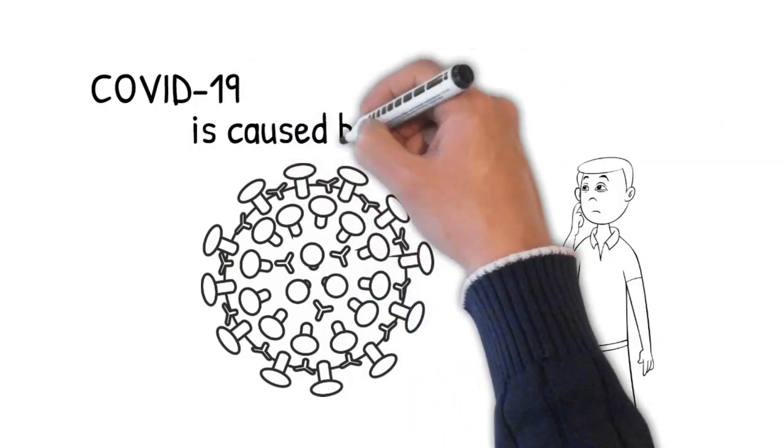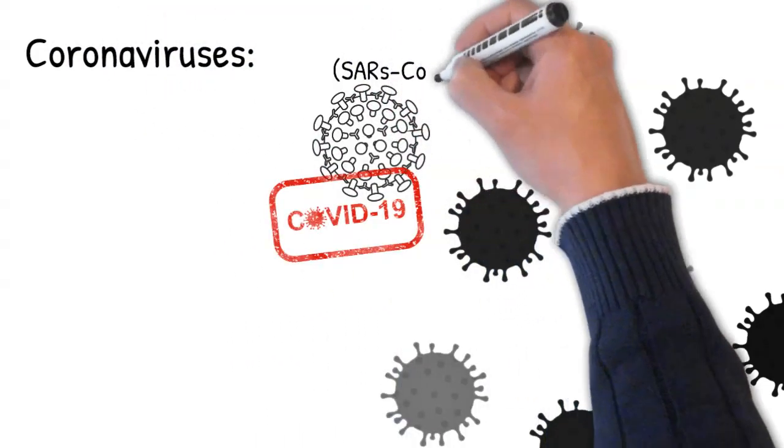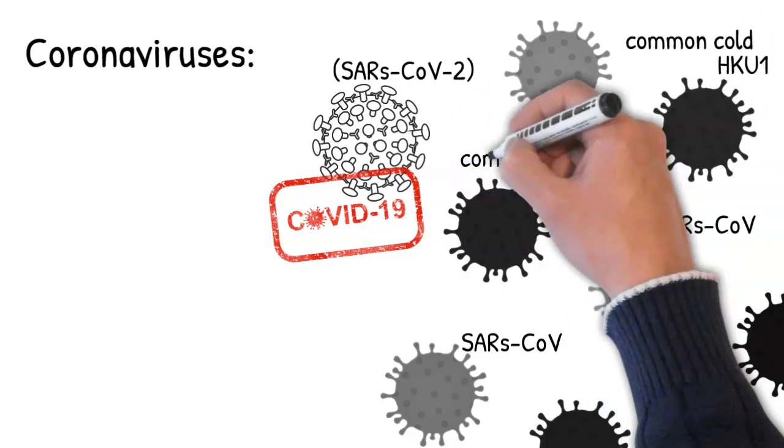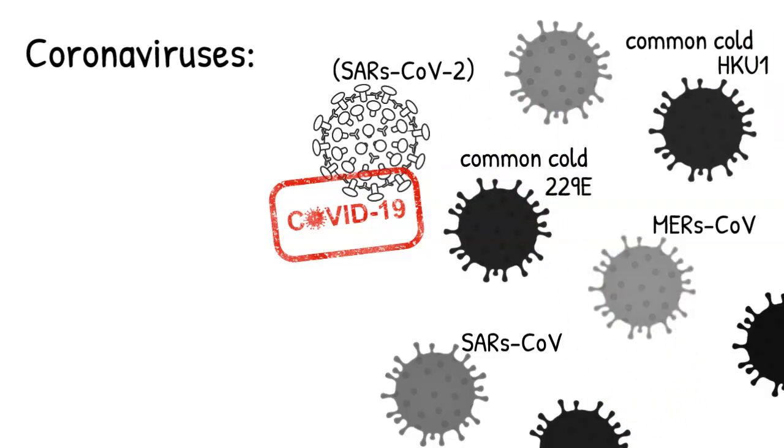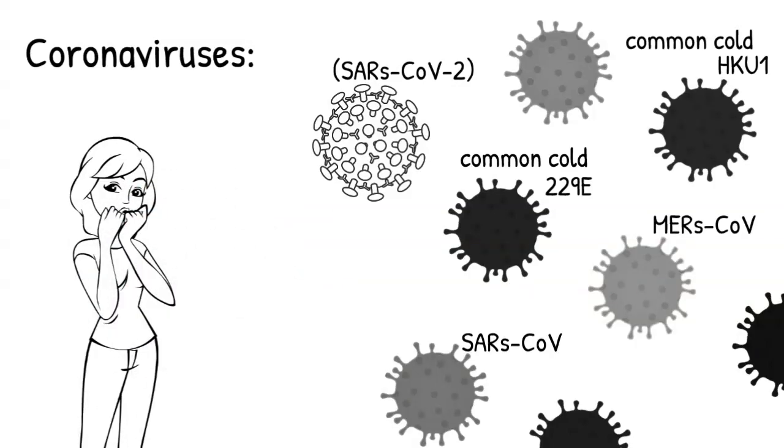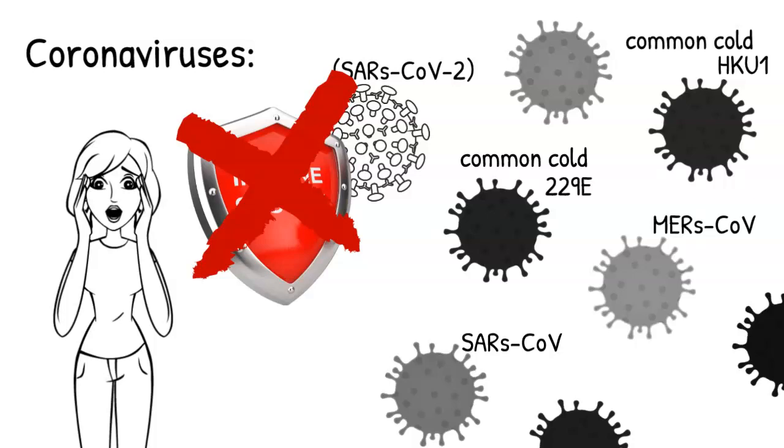COVID-19 is in fact caused by a coronavirus, but just one type among many different coronaviruses that exist. Coronaviruses, which include some that cause the common cold, are a family of viruses that tend to mutate rapidly. This means that naturally acquired immunity typically doesn't last long because the virus rapidly changes.